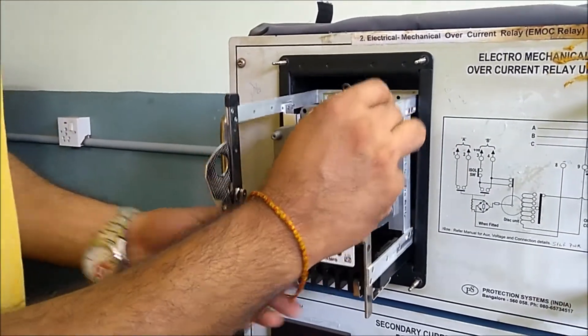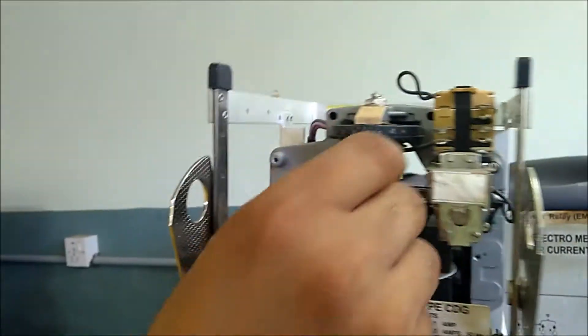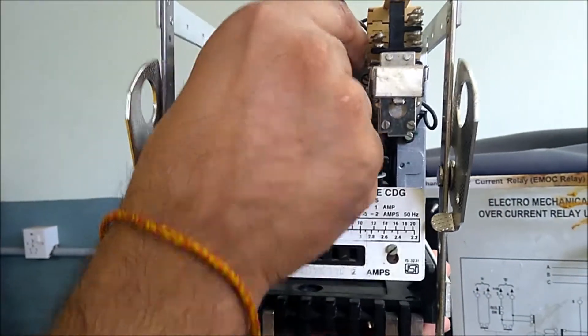As per the construction of the relay there are certain things here, let us check them one by one. Here the first knob we see is called a time multiplier setting knob, default value of this is 1.